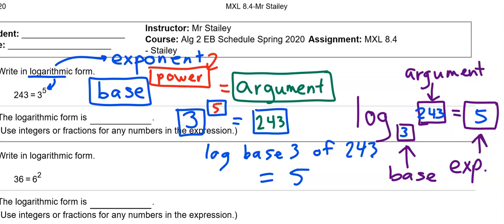You might ask me, well, Mr. Stailey, why don't they just use EXP? Instead of L-O-G, why don't they just use the abbreviation EXP? Because, if logarithm means exponent, it would just make a whole lot more sense. I don't know the answer to that question. Because, I think it would make more sense. But, logarithm is a synonym for exponent. And, you just need to be familiar with that terminology.